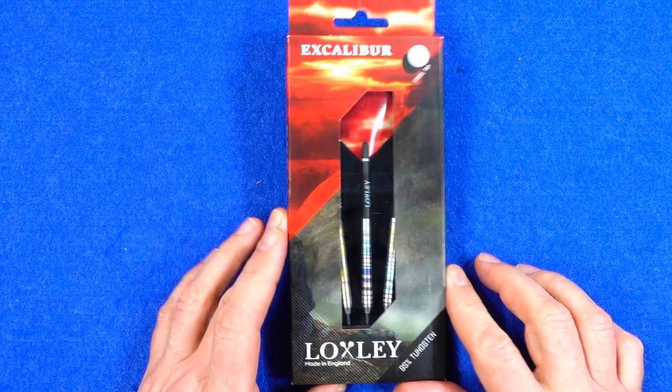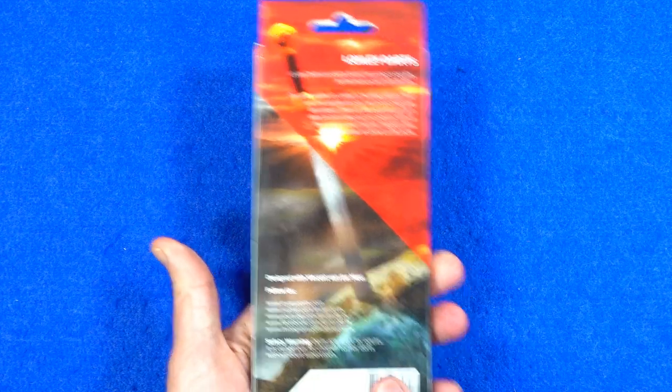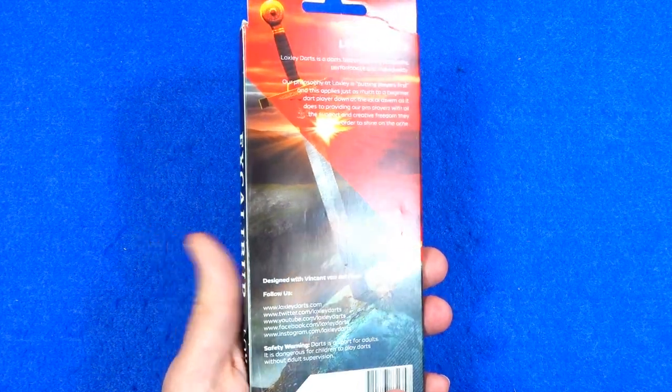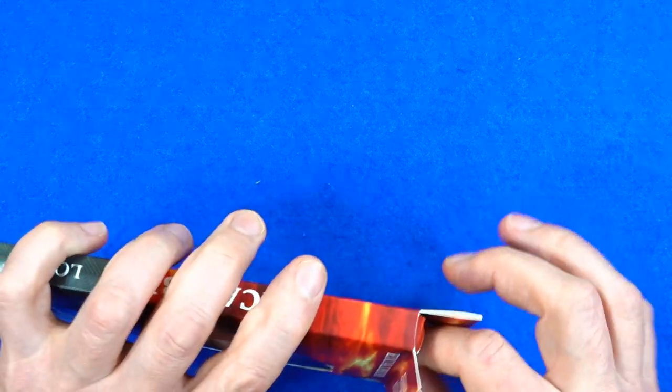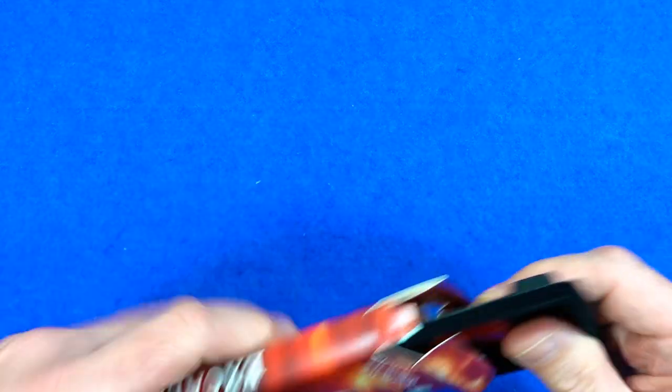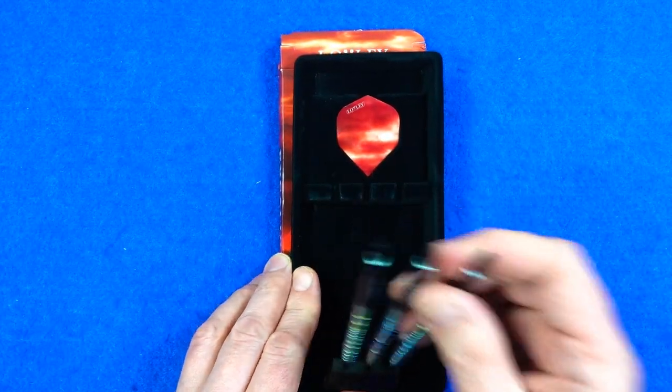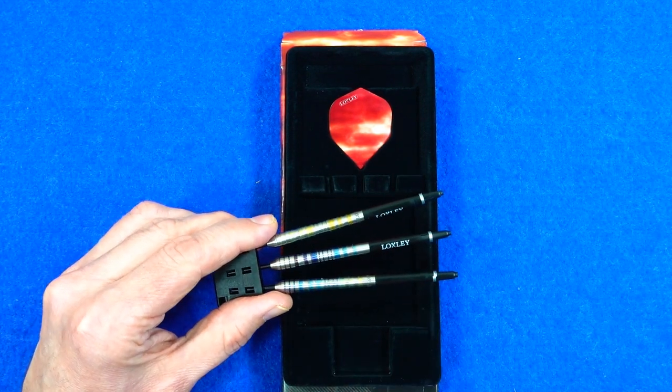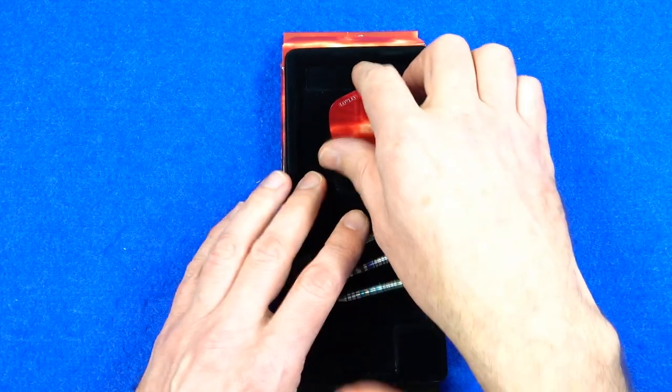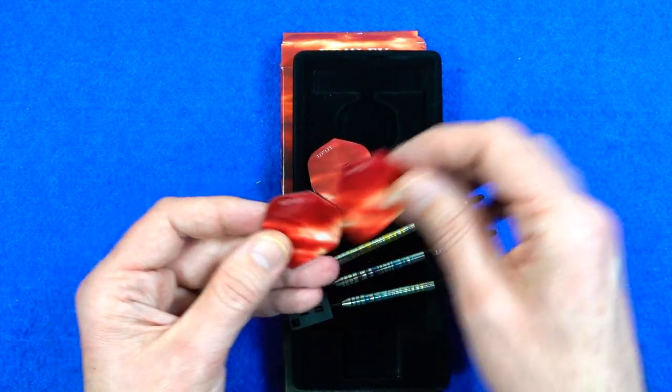The darts come in this slim cardboard packaging with a nice picture on the back of the sword in the stone and a kind of ominous looking red sunset. Inside plastic inlay, the darts are fitted into a point holder and supplied with the Loxley in between nylon stems and a set of standard shaped flights with that red sunset.